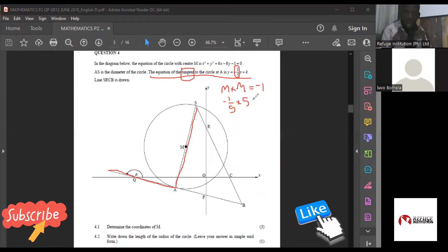We multiply it by positive five to get negative one. So basically, the gradient of the perpendicular line, which is the one that we want, is five. Exactly. So we work with that five to find the equation of that line.